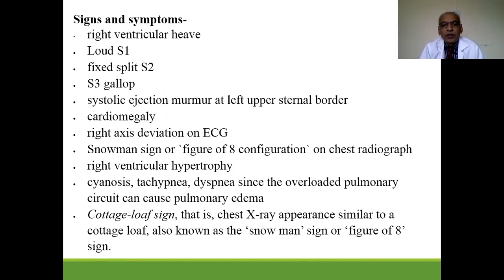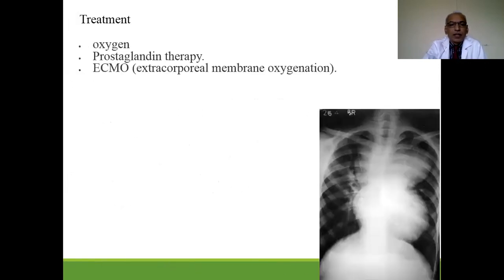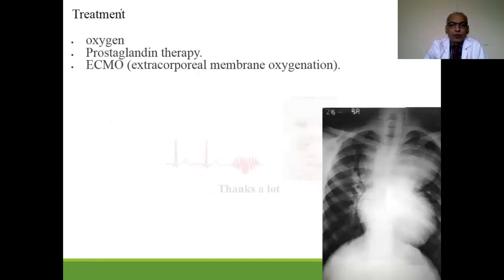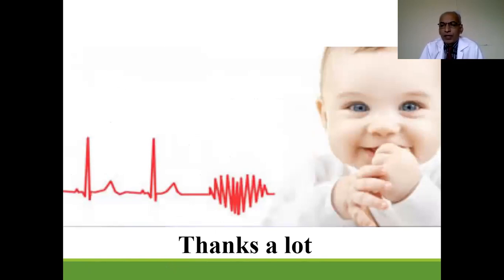X-ray shows a typical figure-8 configuration due to right ventricular hypertrophy. The child has cyanosis, tachypnea, and dyspnea. Treatment includes oxygen and prostaglandin therapy. This concludes congenital heart diseases in children — we divided cyanotic and acyanotic congenital heart disease into two broad categories with obstruction and shunting with decreased or increased pulmonary blood flow. Thank you.